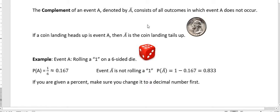So tails and heads are complementary events. Another example, event A is rolling a one on a six-sided die. Well, the probability of rolling a one, there's one chance out of six that you could do that. So one divided by six, which is approximately 0.167, rounding our probabilities to three decimal places.